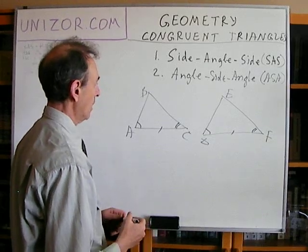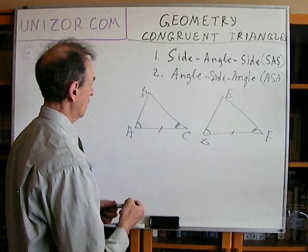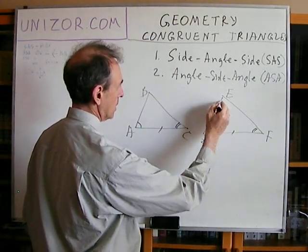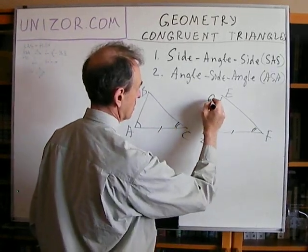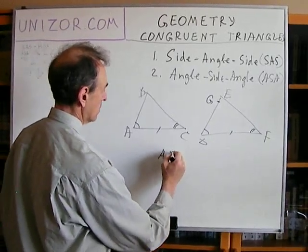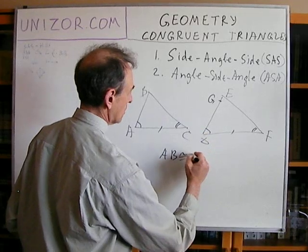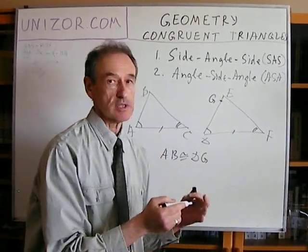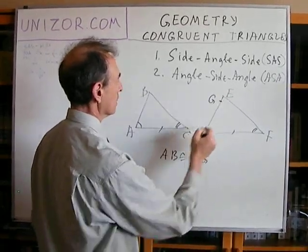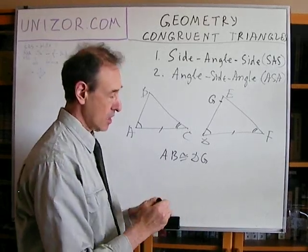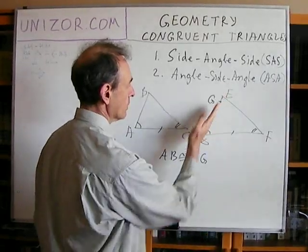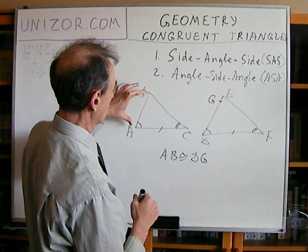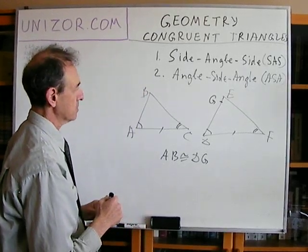Here is the proof. Let's take side AB and find a point G on segment DE such that segment AB is congruent to segment DG. Eventually we would like to prove that G and E coincide with each other, so that the whole segment DE is actually congruent to AB. But right now we don't know that, so we assume there is some point G on side DE, or its continuation, which is congruent to our segment AB.